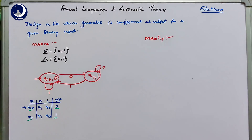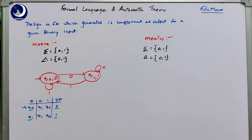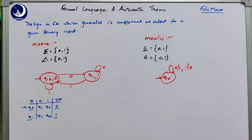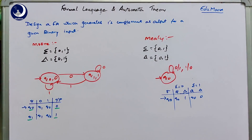Now we design the Mealy machine for the same 1's complement problem. Since output is associated with transitions rather than states, the machine can be designed with only a single state Q0. When input symbol is 0 the output is 1, and when input symbol is 1 the output is 0. In the table, Q0 on 0 and 1 both transition back to Q0, but the output delta changes: sigma 0 gives delta 1, and sigma 1 gives delta 0, generating the 1's complement of any given binary input.